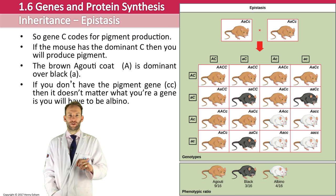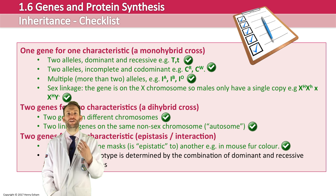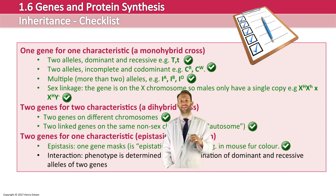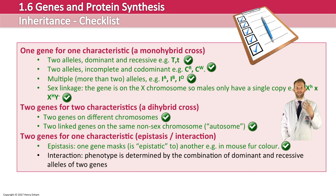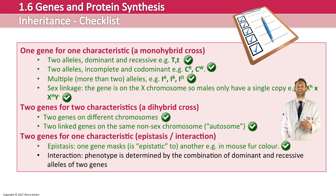The last example is something called interaction. Phenotype is determined by the combination of dominant and recessive alleles of two genes. It's a little bit like co-dominance, but this is where two genes end up forming one phenotype — not two alleles contributing, but two completely separate genes that interact to give the particular characteristic. The example we'll look at is the shape of the crest on a chicken's head, which is coded for by two genes, gene R and gene P.